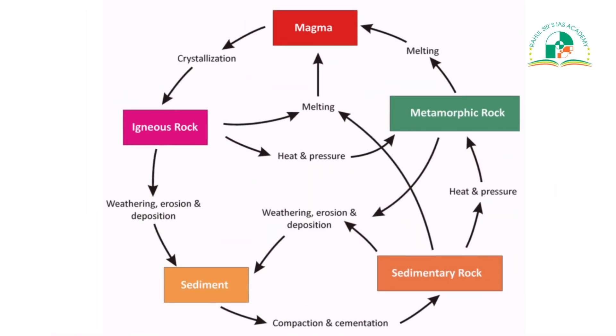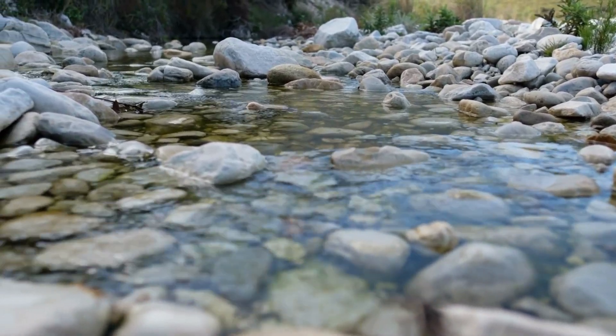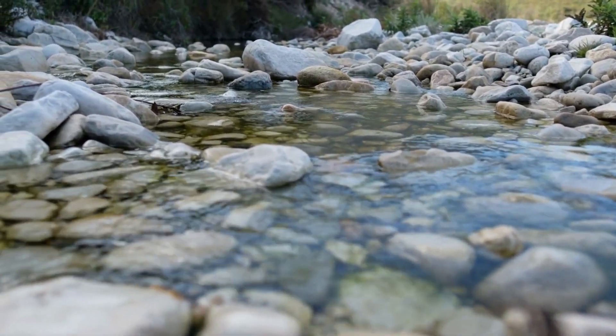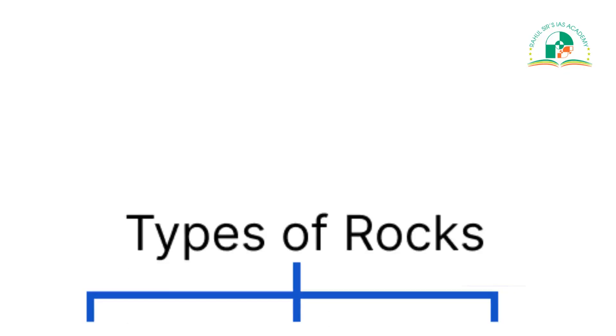Before we learn about the rock cycle and the rock cycle diagram, we must know the basic rock types. All rocks are categorized into three main types, namely igneous, sedimentary, and metamorphic rocks. There is a fourth category as well, called the re-metamorphosed rocks, which are formed by the metamorphosis of the metamorphic rocks.